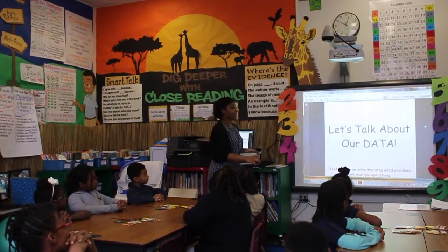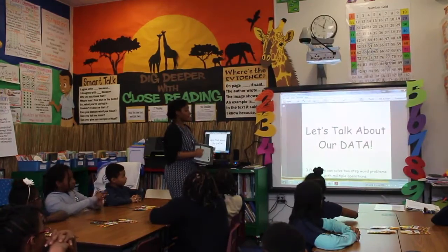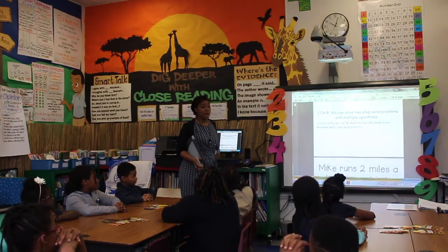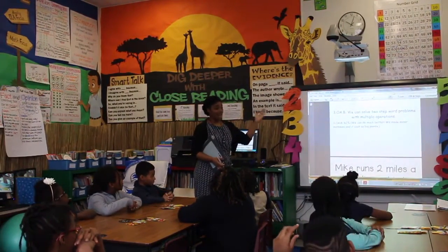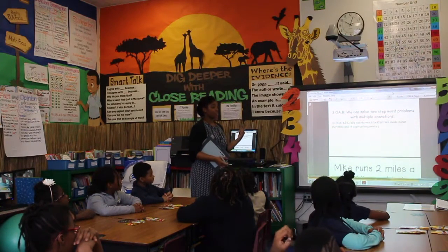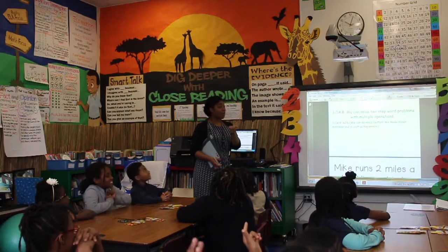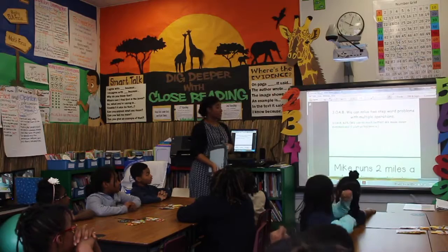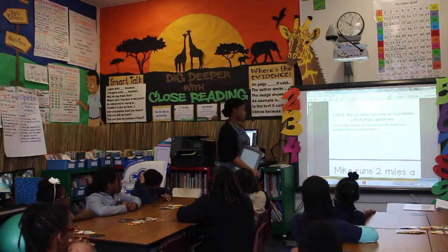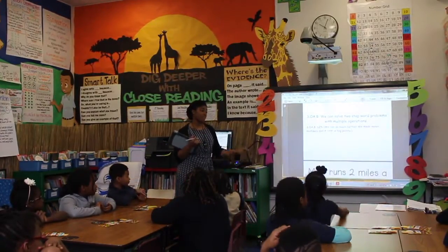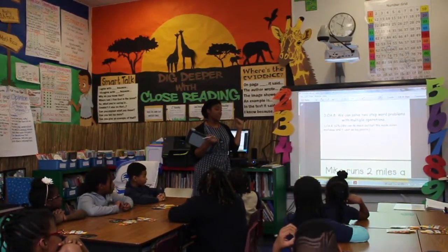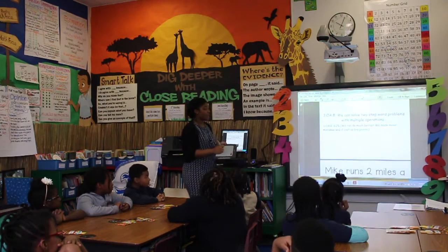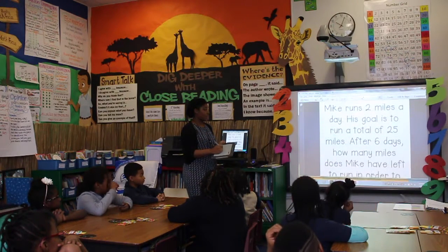The problem of the week yesterday, the standard was all about problem solving — but more specifically it was about two-step word problems with multiple operations. So you notice it wasn't the same thing. It wasn't add and add, or subtract and subtract. It was multiply and subtract or adding. Some people did some different strategies and I want to show that. The thing about it is we had 62%, so I said we could do much better. What I noticed is that we made some minor mistakes in not really reading the question carefully. That cost us big points — you can't get all your points if you just get half of the question correct.